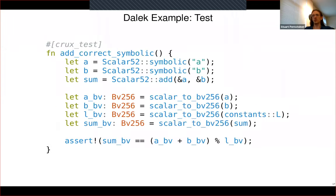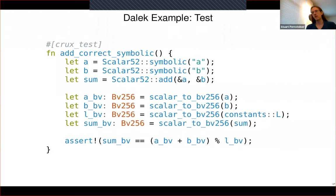Here's how we'd test that with CruxMirror. We create symbolic inputs for arguments A and B. We compute their sum according to the scalar52 add function, and then compute the same function over 256-bit bit vectors — on the assumption that the solver's underlying bit vector type is correct. We check that if we take the two scalar52 inputs and their scalar52 sum, and convert them from the scalar52 representation to a 256-bit bit vector, the add function has correctly computed A plus B mod L. You set up symbolic inputs, call some function over those inputs, and assert something about the result.